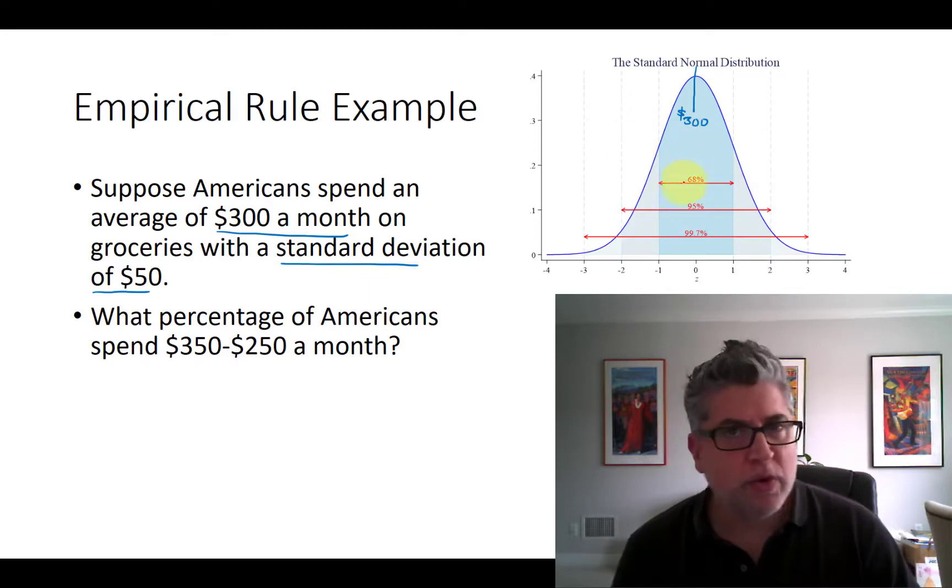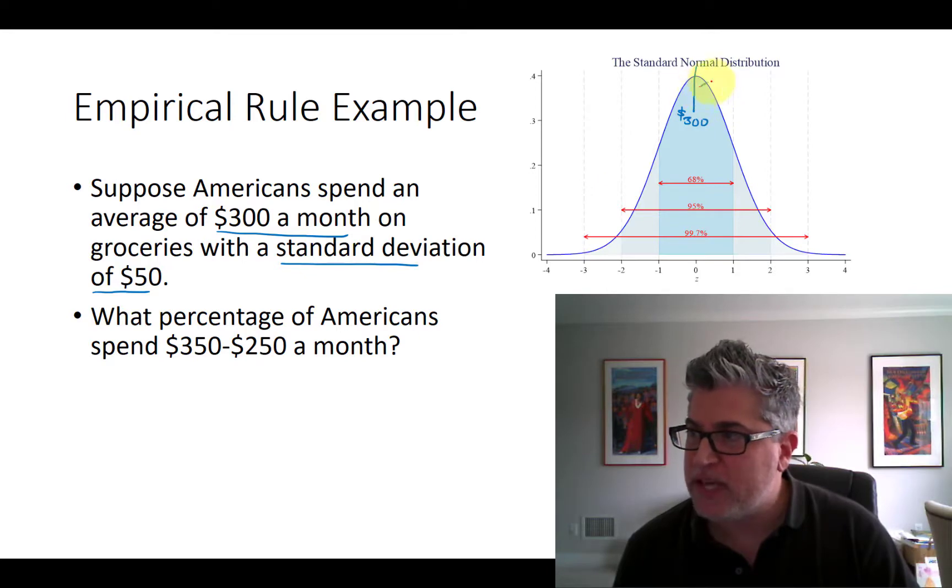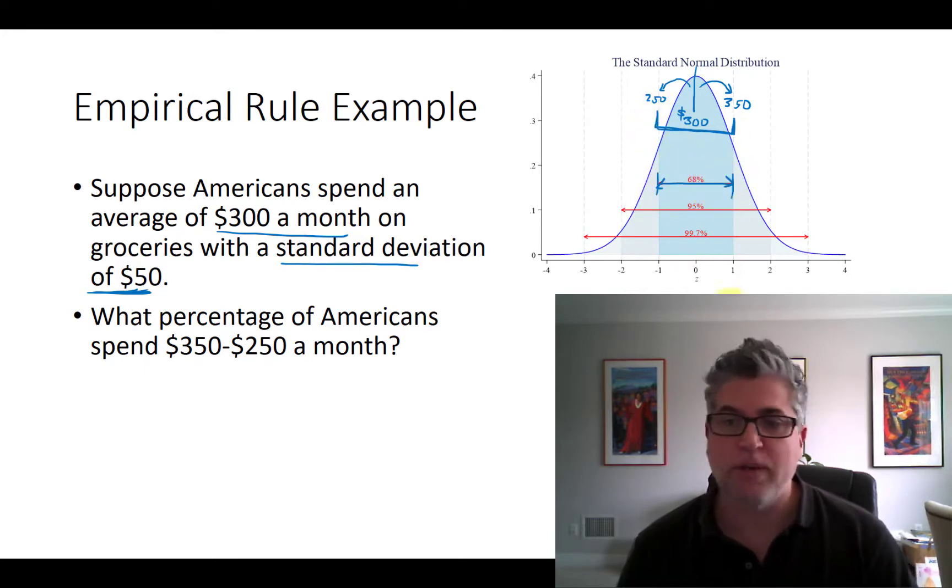Then we can use the empirical rule to know what percent of Americans spend between $350 and $250, because if we take $300 and we add one standard deviation, that brings us to $350, right? Because our standard deviation is $50. And we subtract $50 to bring us to $250. Then this range, $350 to $250, accounts for 68% of all of our observations.